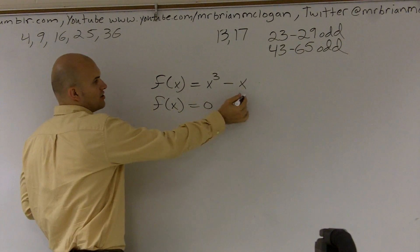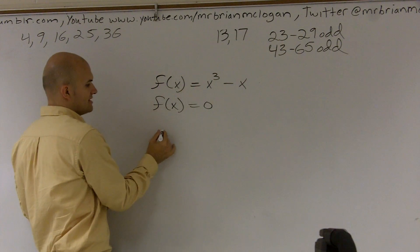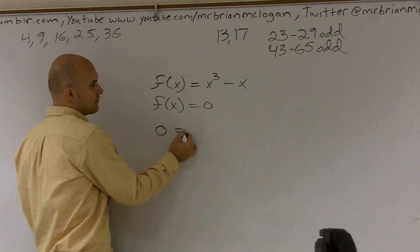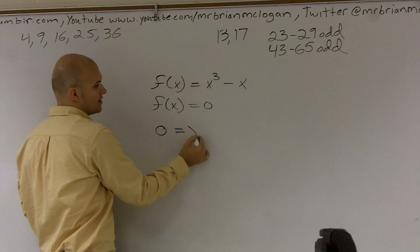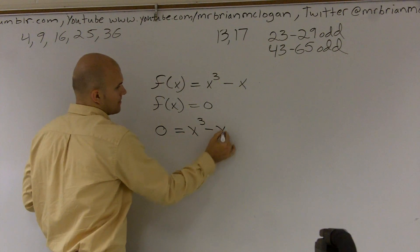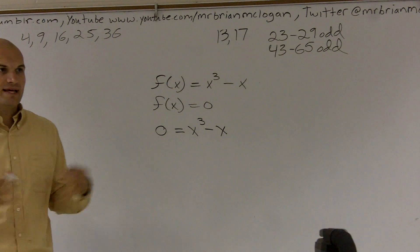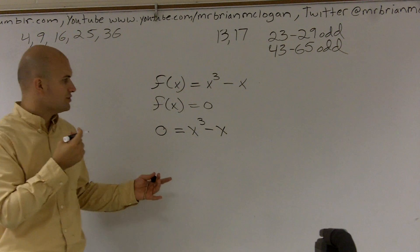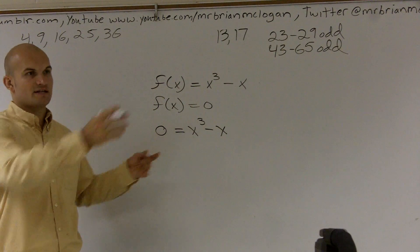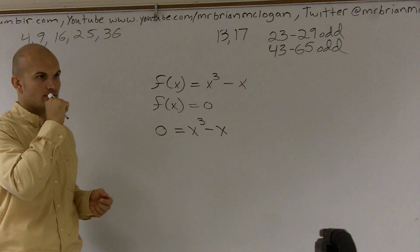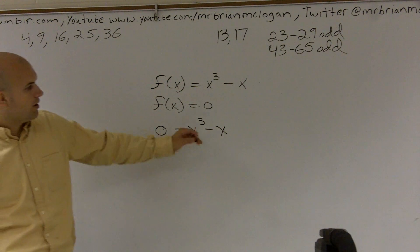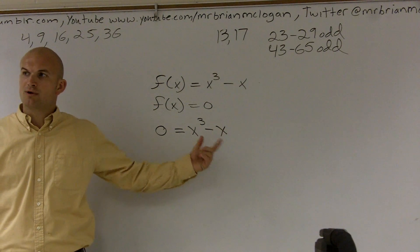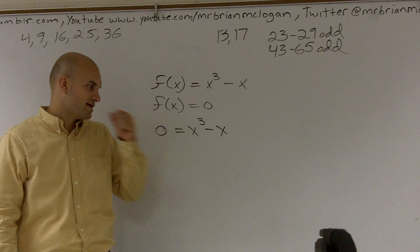So here's our original function — we're going to say 0 is the value we want. What values for x are going to do that? Since we have two variables, we can't just solve directly, so we're going to want to see if we can put these as a set of linear factors.